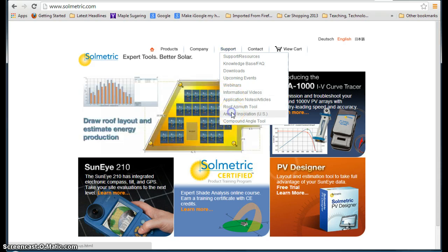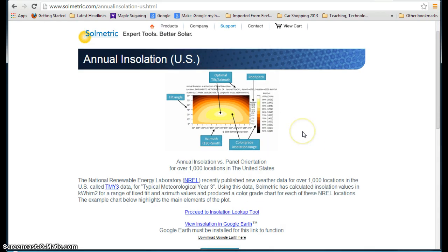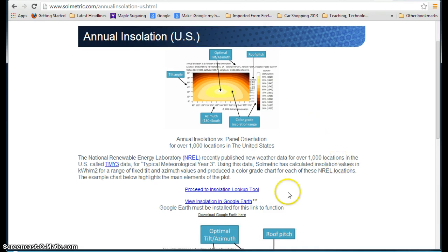click on Annual Installation U.S., do a little left click there, it's going to take you to this screen. Feel free to read this if you'd like to, it tells you where the data came from and all that sort of stuff. You have two options here, you can actually click on this and go to Google Earth if you just want to find a location or an address and click on it. But we're going to look up by state and town, so we'll go to Proceed Installation Lookup Tool.